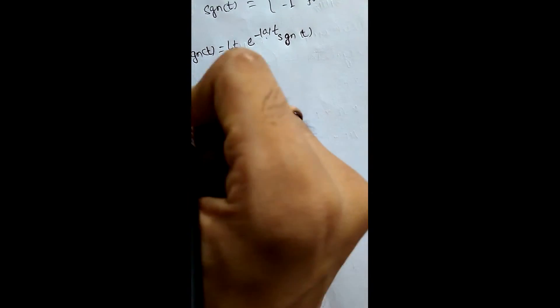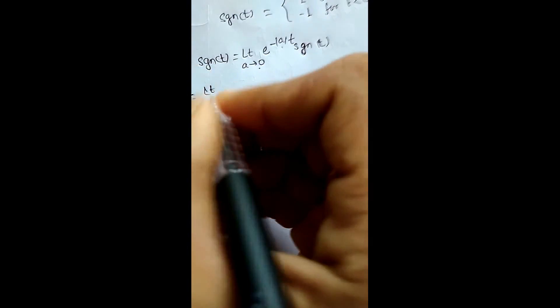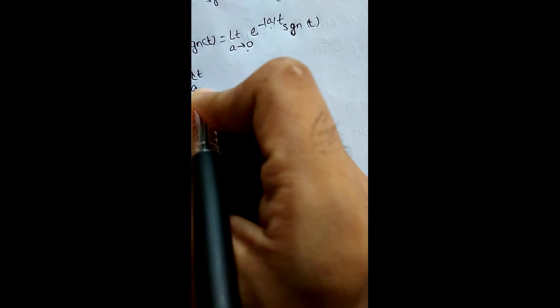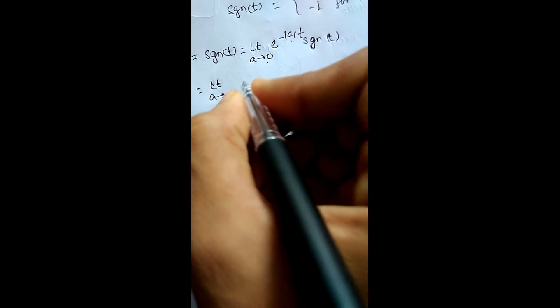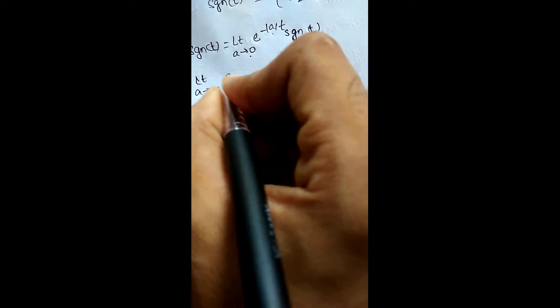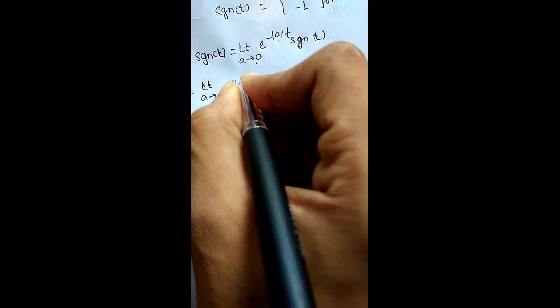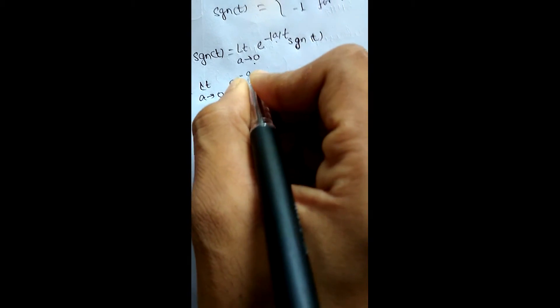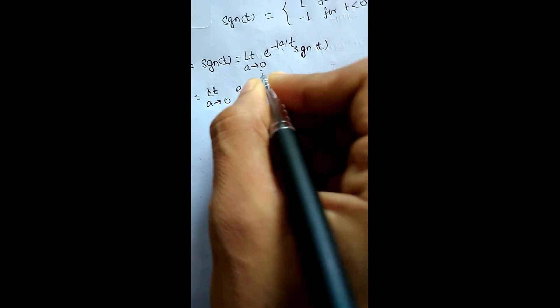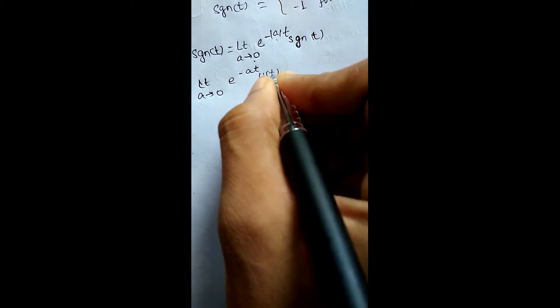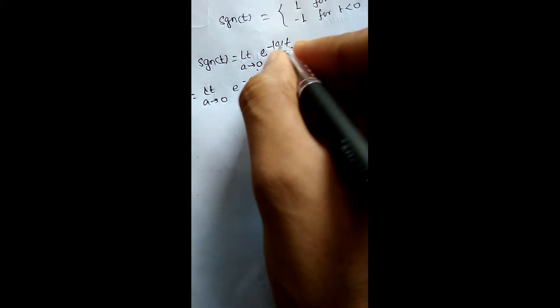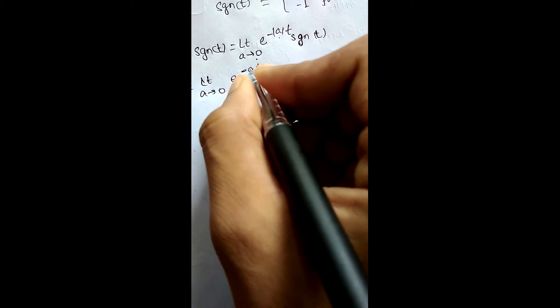It can also be written as: limit as a tends to 0, for t greater than 0 it can be written as e to the power minus at times u(t) minus e to the power minus at times u(minus t).